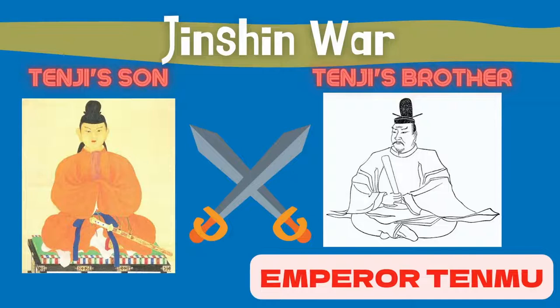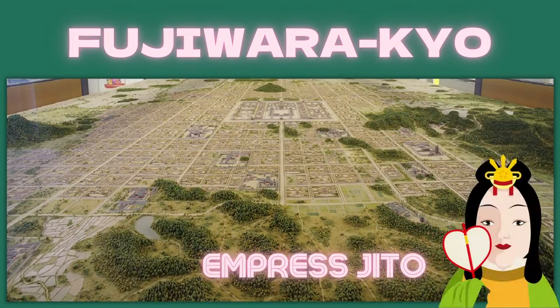When Emperor Tenji died, a war broke out between his child and his younger brother over the position of the successor. This was the Jinshin War. The younger brother, who won the battle, became Emperor Tenmu. He used his great power to push for reforms. After the death of Emperor Tenmu, his empress became Empress Jito and took over the reforms. She built Fujiwara-kyo, the first advanced capital in Japan.